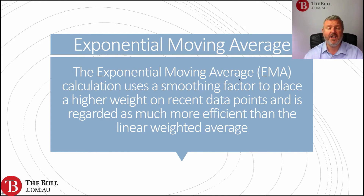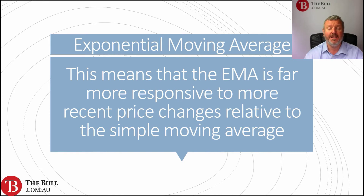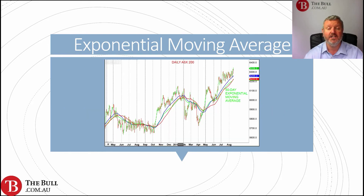The exponential moving average calculation uses a smoothing factor to place a higher weight on recent data points and is generally regarded as more efficient than the linear weighted average. The EMA is a weighted average but the weighting is applied exponentially, with a bias to the most recent data point. This means the exponential moving average is far more responsive to recent price changes relative to the simple moving average. Here we see the exponential moving average in green, sitting between the simple moving average in red and the linear weighted moving average in blue.